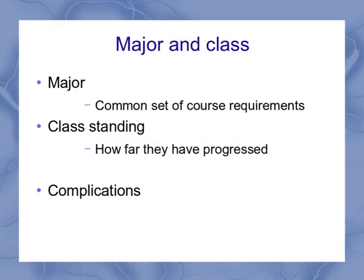Major and class standing are a lot more useful when you're talking about college students, because all the students in a particular major are going to have a common set of course requirements. They all have to study the same sorts of things, and there are some classes that all of them will have to take that students from other majors don't take. Class standing — freshman, sophomore, junior — is an indication of how far you've progressed in that major.